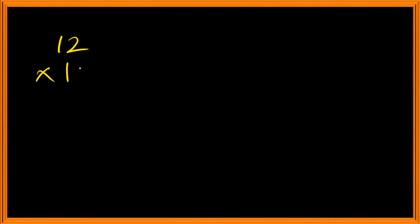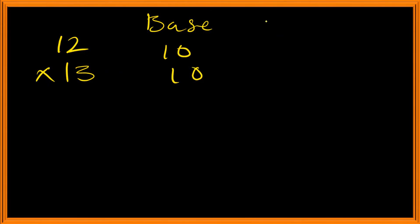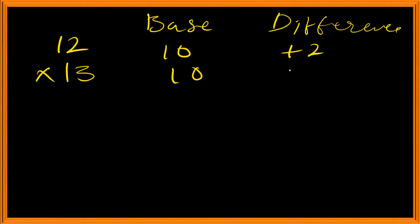Let's take the example of 12 multiplied by 13. In this concept we have to know about the base. The base is the most important part here — the base is 10. Then we learn about the difference, or deviation, from 10. The difference is plus 2 and plus 3.